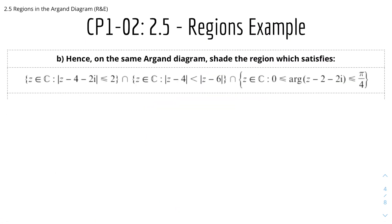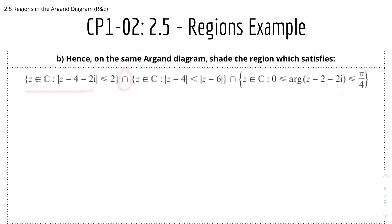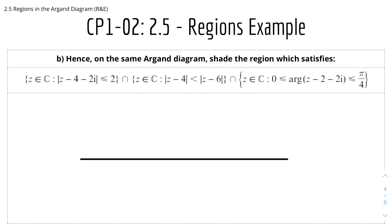For the last part: on the same Argand diagram, shade the region which satisfies all 3 loci simultaneously — this represents the intersection in set notation. I'll quickly sketch all three loci combined together.